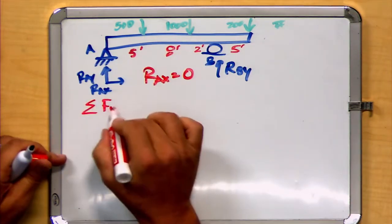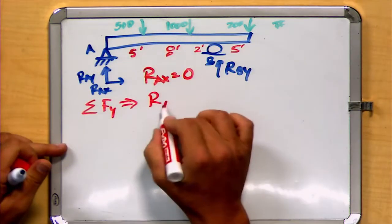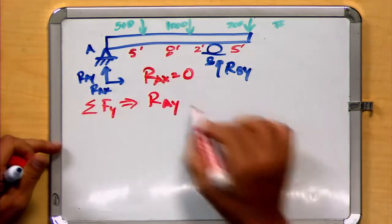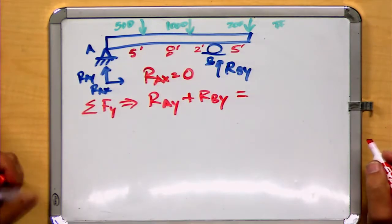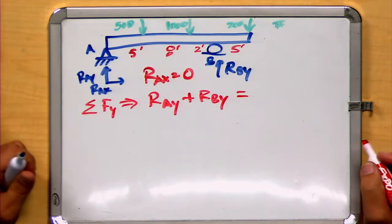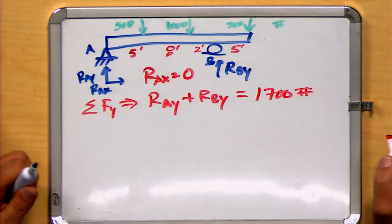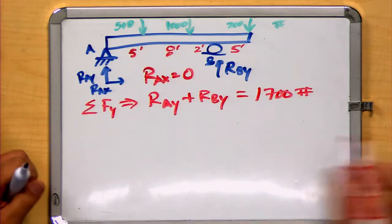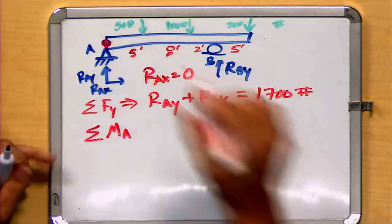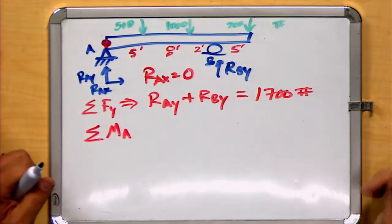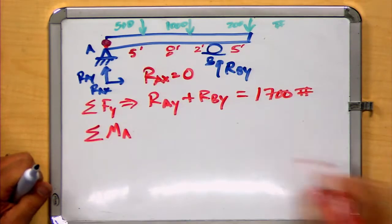For a sum of forces in the Y direction, we recognize that RAY plus RBY must be equal to the sum of all those pointing down, which is a total of 1,700 pounds. Now, we'll go ahead and take moments about a particular point. Let's take the moments around point A. Here's point A, so we can eliminate RAY and RAX from the equation.